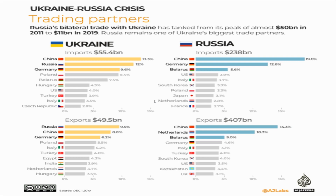I want to mention the trading partners of Ukraine and Russia during the war. The top countries for both Ukraine and Russia include China and Germany. Before the war, Russia was the second largest trading partner for Ukraine, which was very significant, but after the war they stopped all kinds of trade.